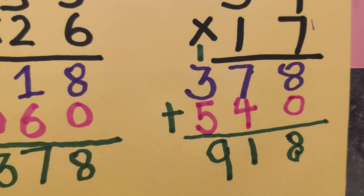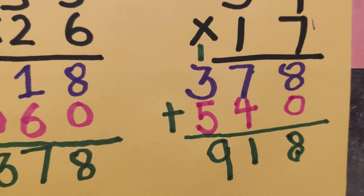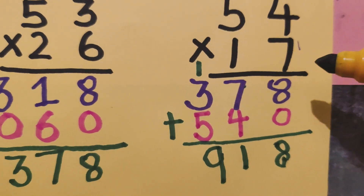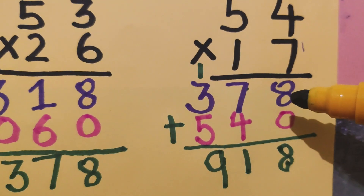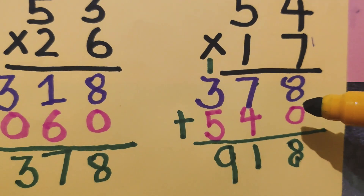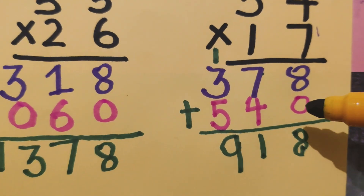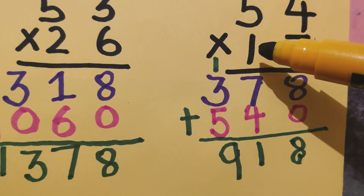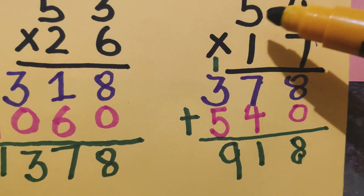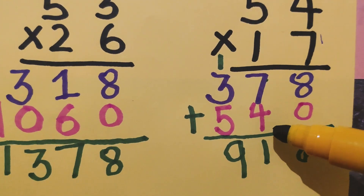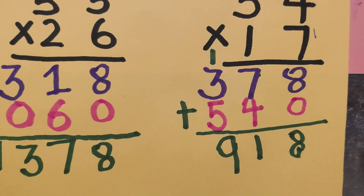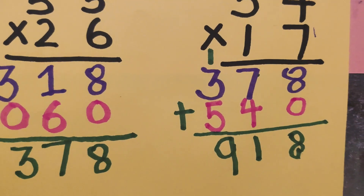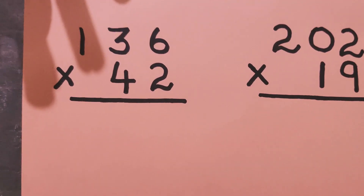When you get the answer, children, you can also check whether you have followed all the steps or not. The second step, which is very important and which most children forget, is putting 0. We have done that. The third step is multiplying with the tens digit — that also we have done. And the last step is adding — that also we have done.